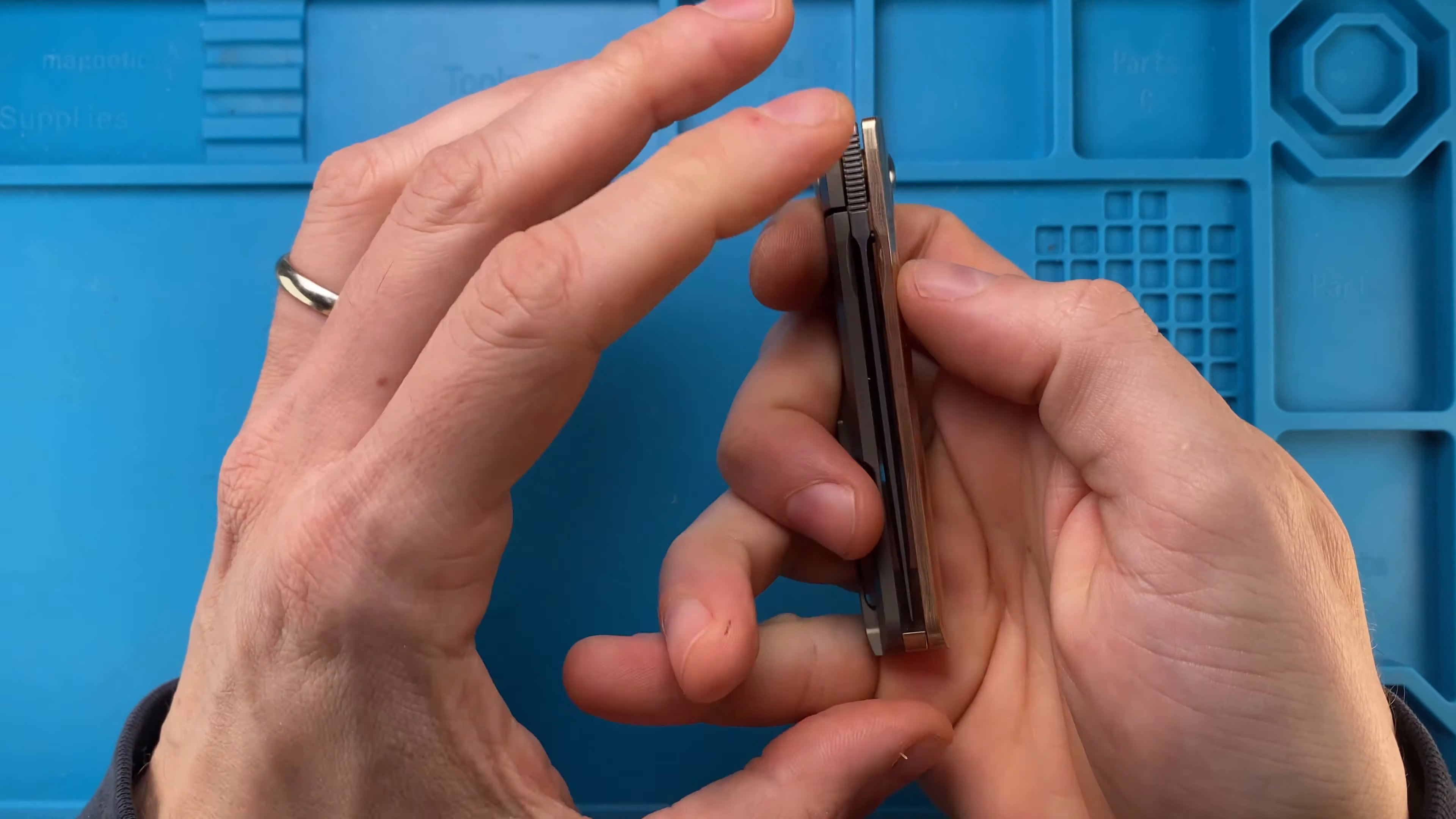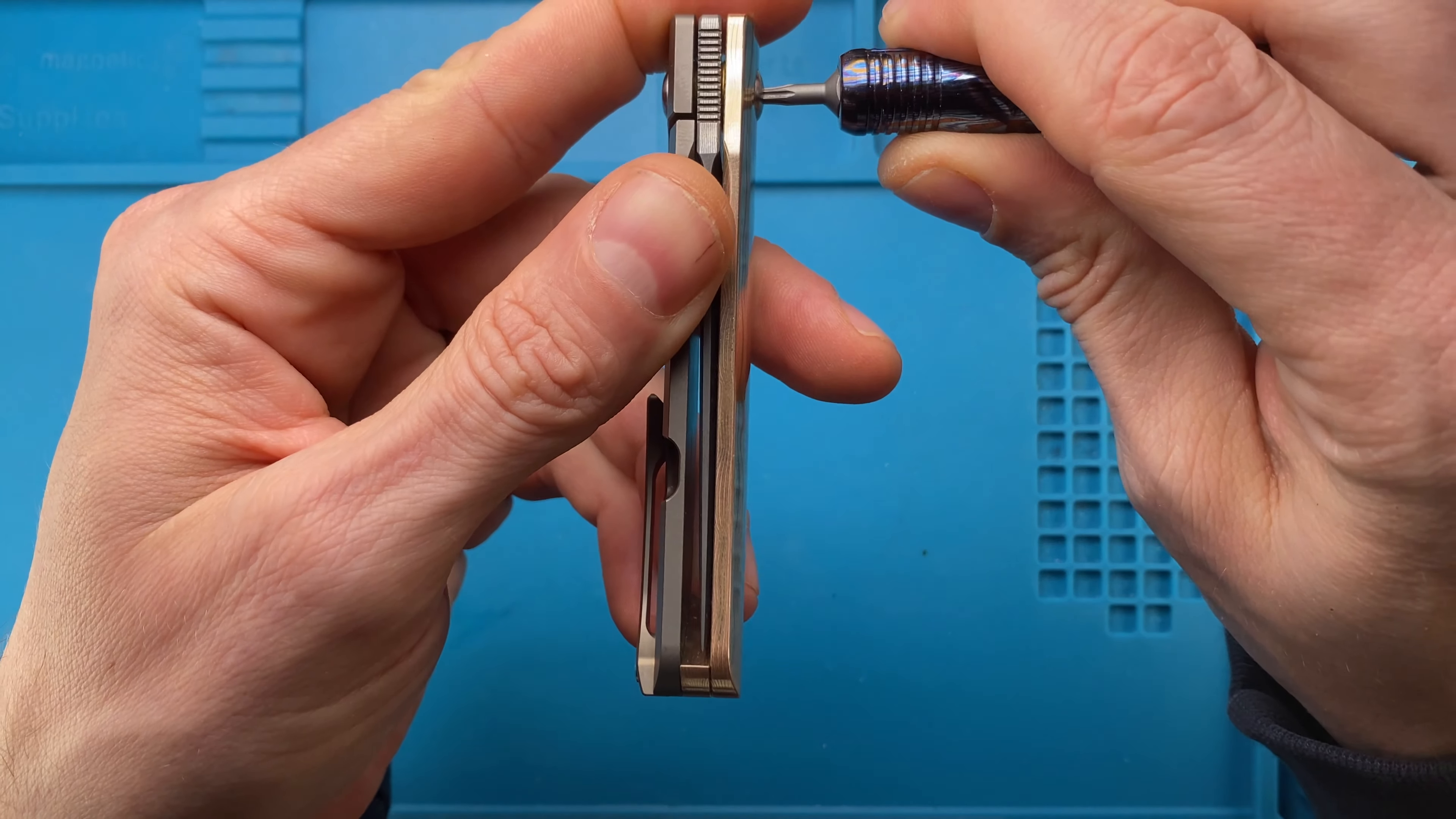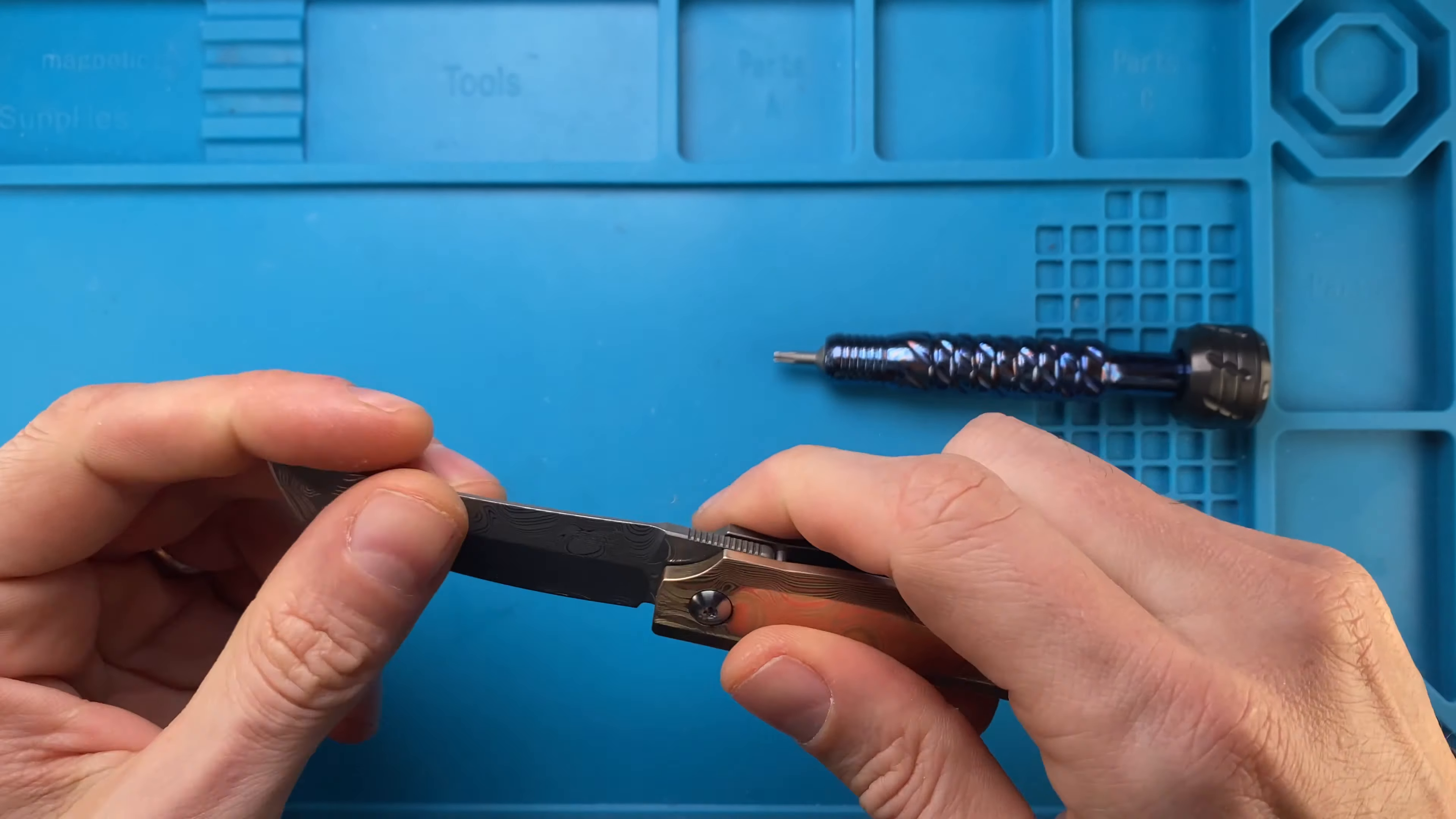There you go. So, let's see, blade is centered. Maybe I tightened that too much. So, let's just do a little bit less. You can actually see, as you tighten, the blade gets to the center. When it gets to the center, you just release it.